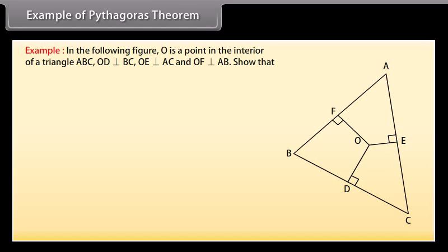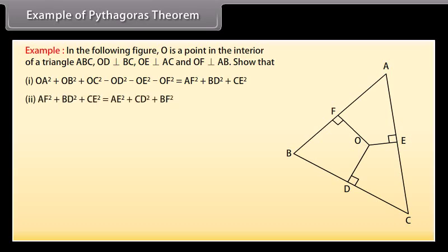Example: In the following figure, O is a point in the interior of triangle ABC. OD is perpendicular to BC, OE is perpendicular to AC, and OF is perpendicular to AB. Show that: (1) OA² + OB² + OC² - OD² - OE² - OF² = AF² + BD² + CE², and (2) AF² + BD² + CE² = AE² + CD² + BF².